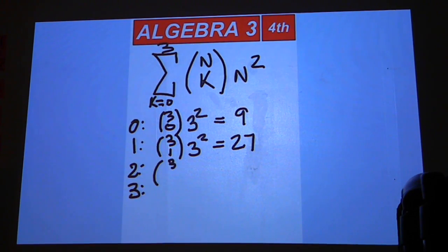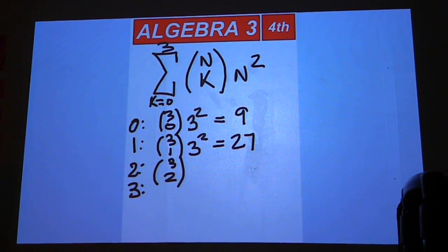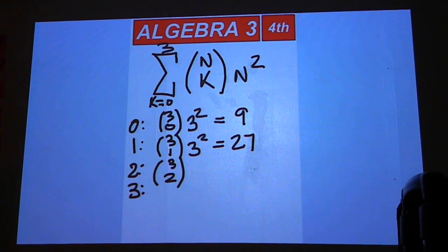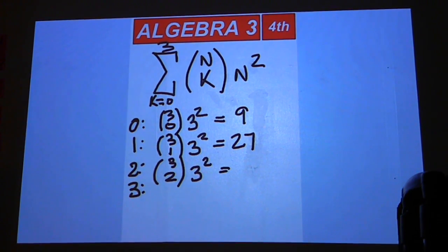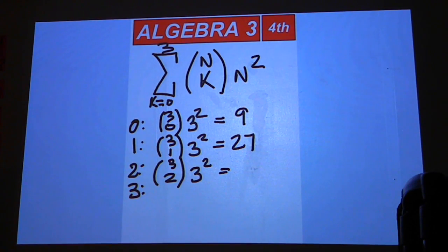And then the next one is three choose two. How many ways can you choose two out of three? Three. And then we'll have another three squared. So we'll have three squared is nine times three is 27.